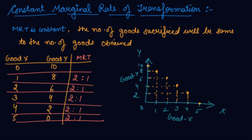So your MRT will be a straight line when your MRT is constant. MRT is constant, it will be a straight line.